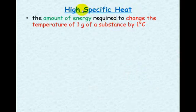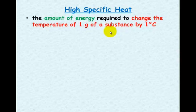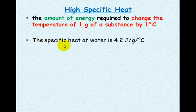High specific heat. Water has a high specific heat. A high specific heat is the amount of energy required to change the temperature of one gram of a substance by one degree Celsius. The specific heat of water is 4.2 joules per gram per degree Celsius. So it's the amount of energy per gram to change degrees Celsius.